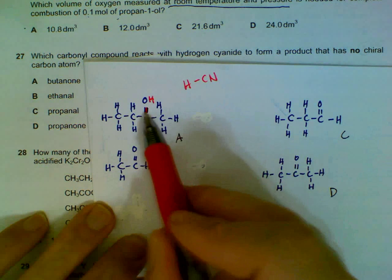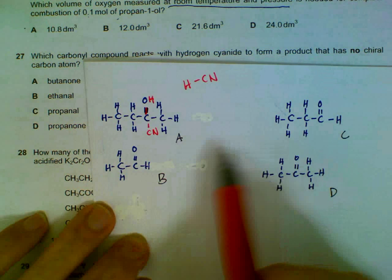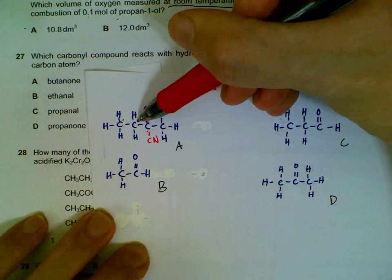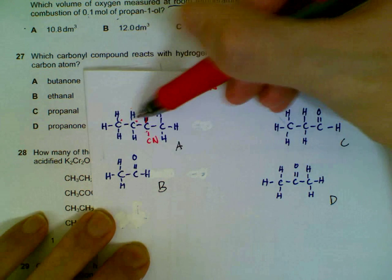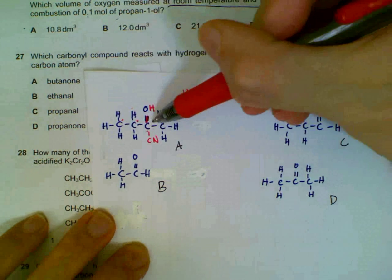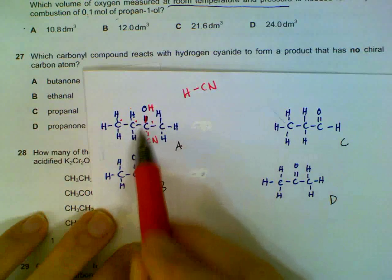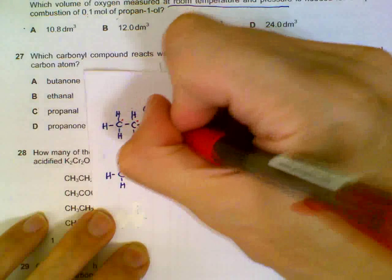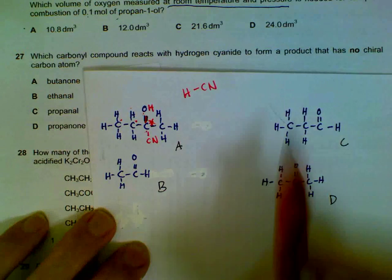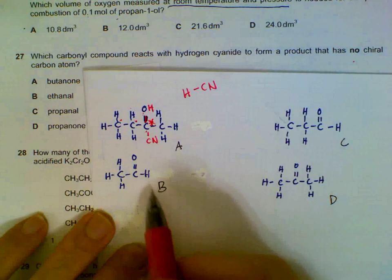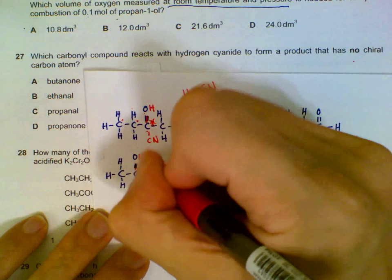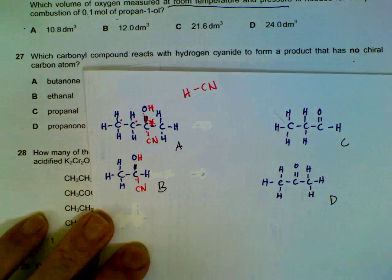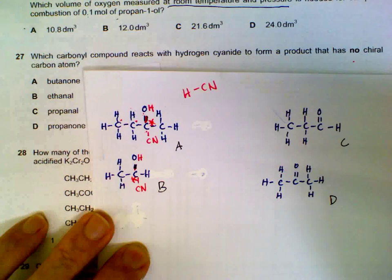We check whether each product has a chiral carbon. Some carbons have no chiral centre — for example, two hydrogens are the same group, or three hydrogens are the same group. But one carbon has four different groups attached, so there is a chiral carbon there. We carry on checking each option.